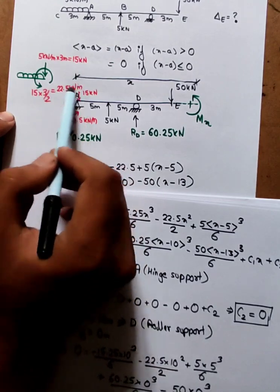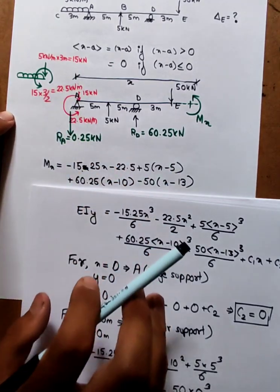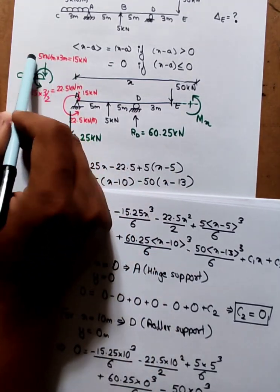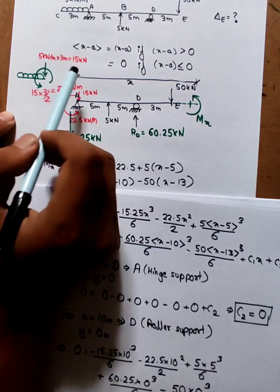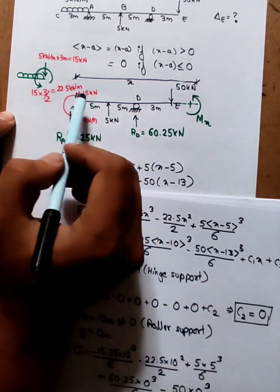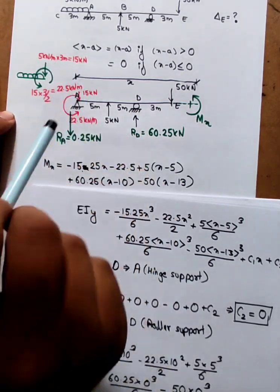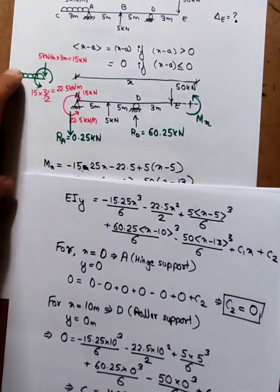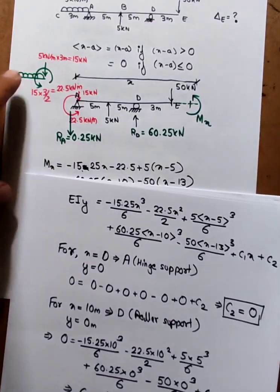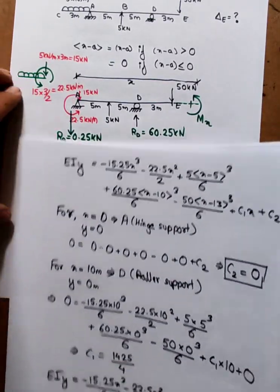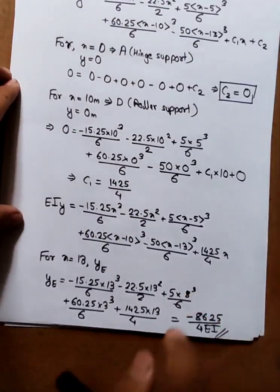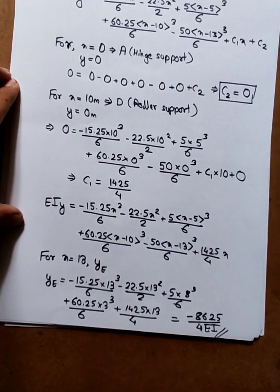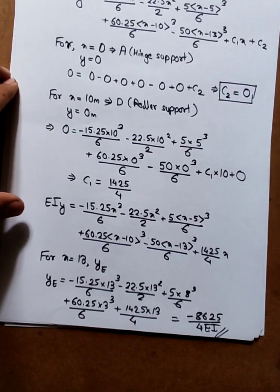The equivalent force to the moment — if you look at the downward force, the moment is given. The answer is the same whether using the negative value or the equivalent method. This method is a 5CT and the error force. Thank you.